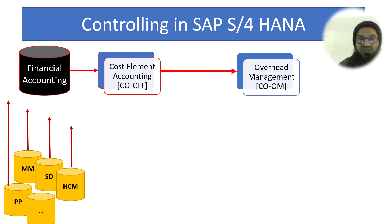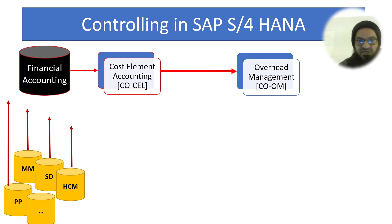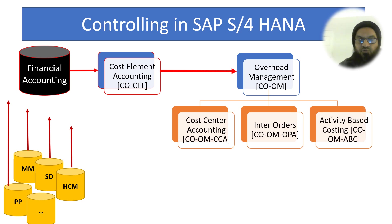The first sub-module in Controlling is Cost Element Accounting. This is the interface between the Financial Accounting and Controlling modules, because the data flows from the Financial Accounting module to the Controlling module through this interface — Cost Element Accounting.